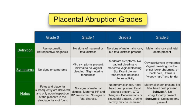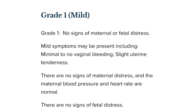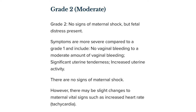Placental abruption is classified into four classes. Class 0 is asymptomatic with no clinical signs. Class 1 (mild) is the most common, occurring in 50 percent of cases — there may be some or no vaginal bleeding, and importantly, there is no fetal distress.